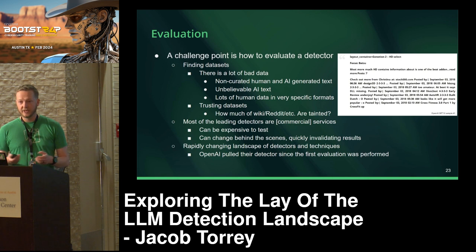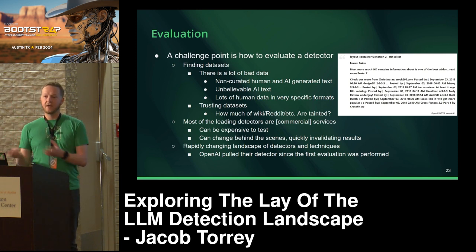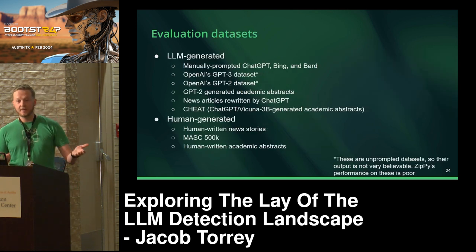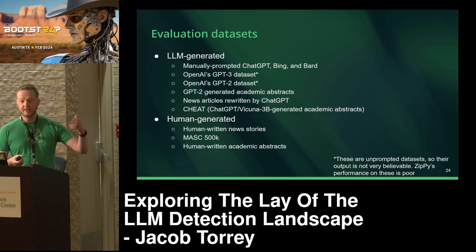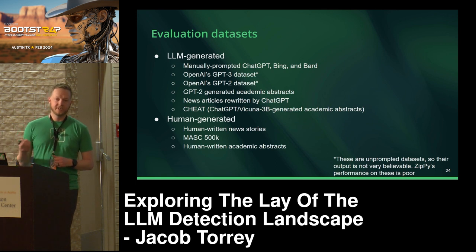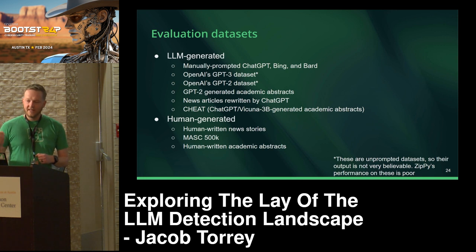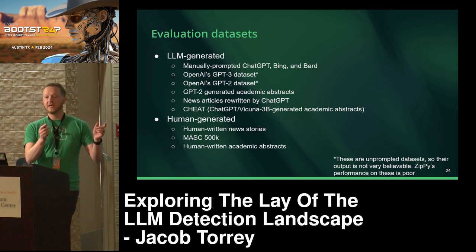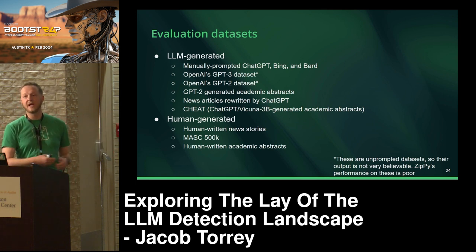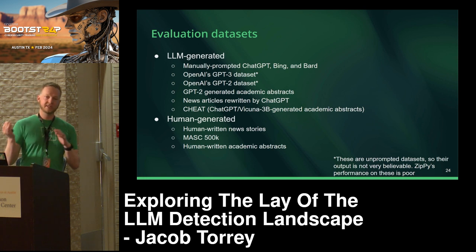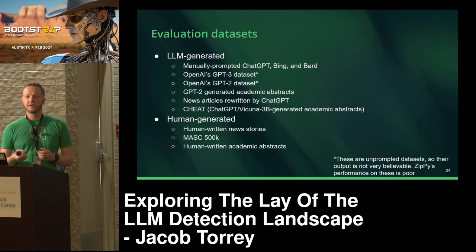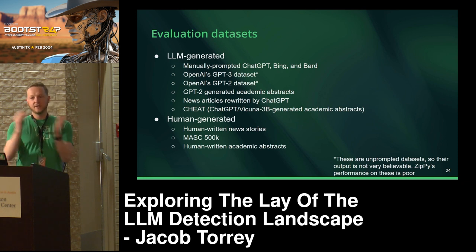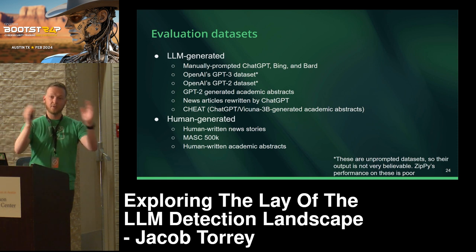Even just in the last year, OpenAI has pulled their detector, others have come in and gotten better or worse. So for the benchmark — which is all in the repo, trying to be a repeatable benchmark — I have manually prompted samples from ChatGPT, GPT-4, Bing, and Bard. I have their unprompted datasets from GPT-2 and GPT-3, but they're pretty bad. There was a lot of work in academic integrity, so there are datasets where you ask ChatGPT to write an abstract given the title from an IEEE paper published probably before the ChatGPT era — you have the original article hopefully written by a human, and then the ChatGPT-generated version.